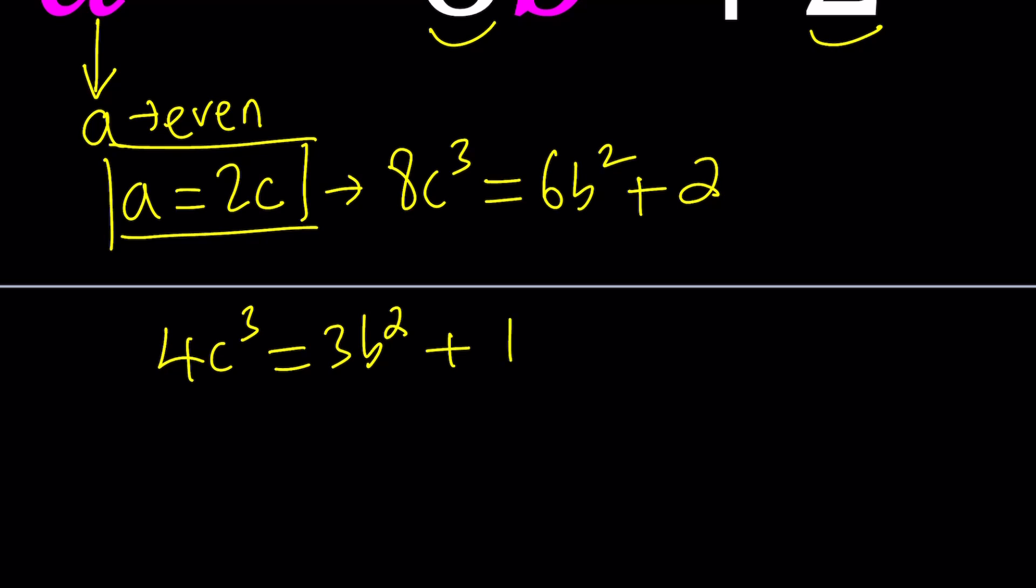Now, at this point, notice that 4c³ is even, and 1 is odd, 3b² is odd, so b is probably odd from here. Does that make sense? Because if b is even, then 3 times b² is going to be even, even plus 1 is going to be odd, but there's no way 4c³ can be odd. So this basically implies, hopefully that made sense, that b is odd.